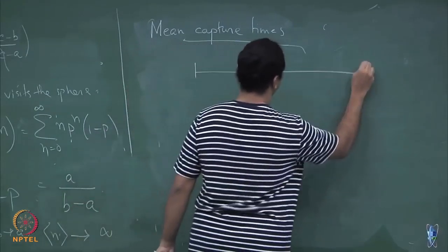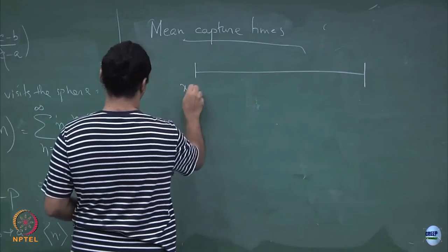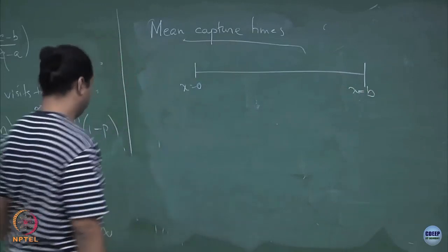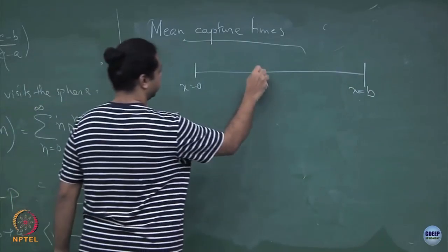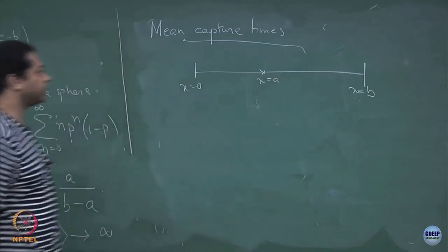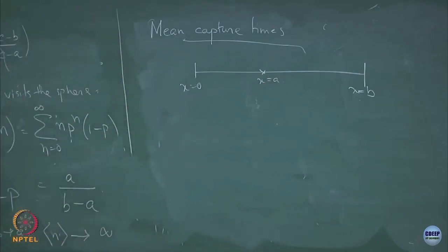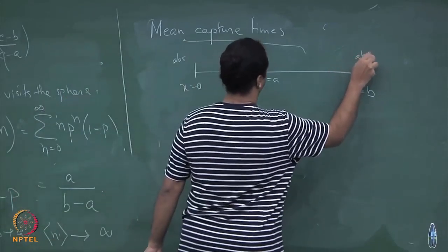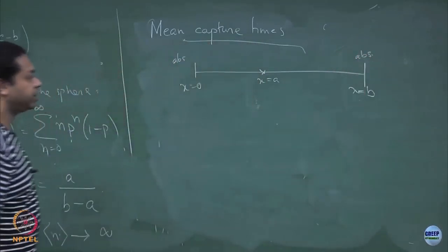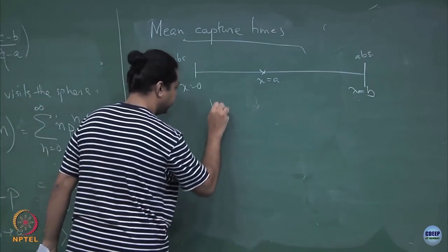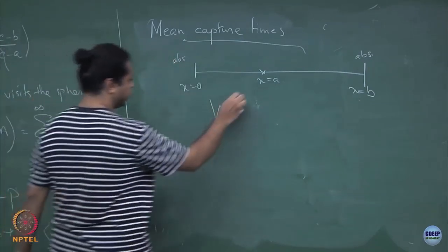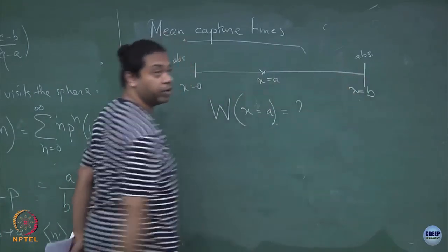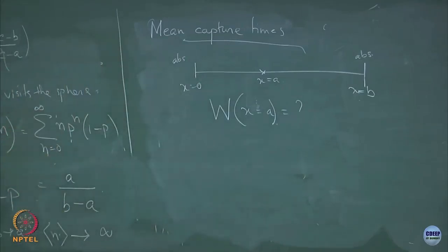Let me take this domain between x equal to 0 and x equal to b. I release the particle somewhere at x equal to a, and let us say both these boundaries are absorbing. I want to find out what is the mean time it will take for a particle released at x equal to a to get captured at either of these boundaries. It can get captured at either boundary.